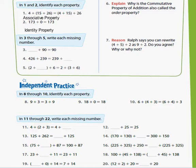In three through five, write each missing number. So number three, it says blank plus 90 equals 90. That's the identity property. So that's a zero.